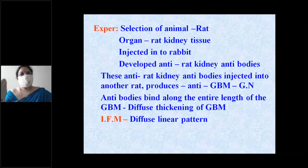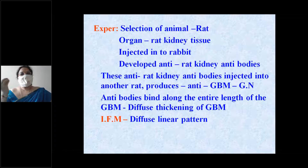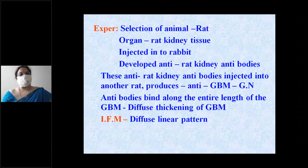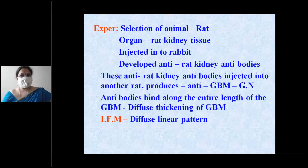In the rabbit, the rat kidney tissue acted as an antigen, leading to production of anti-rat kidney antibodies. These antibodies were then collected and injected into another rat.